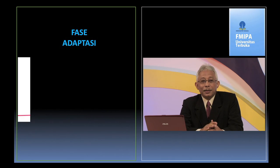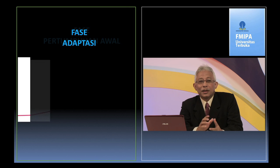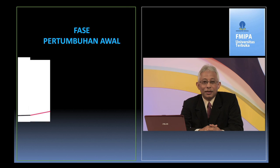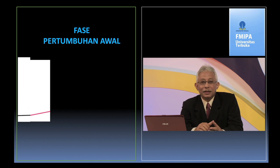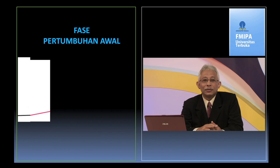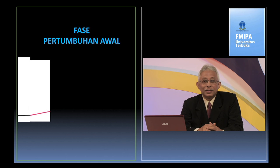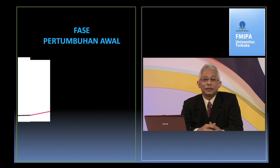Setelah mengalami fase adaptasi, sel mikroorganisme masuk pada fase pertumbuhan awal. Pada fase ini, sel mikroorganisme mulai membelah dengan kecepatan yang masih rendah, karena baru menyelesaikan penyesuaian dengan lingkungan di sekitarnya. Enzim-enzim yang disintesis sudah mulai lengkap, tetapi aktivitasnya belum optimum, sehingga kecepatan pertumbuhan sel masih lambat.